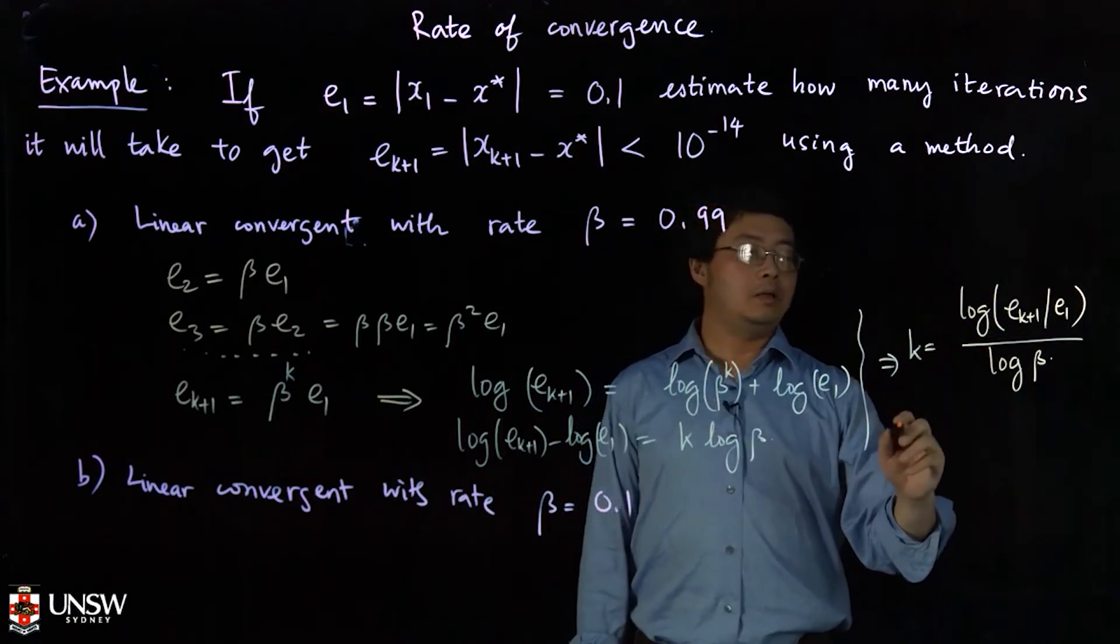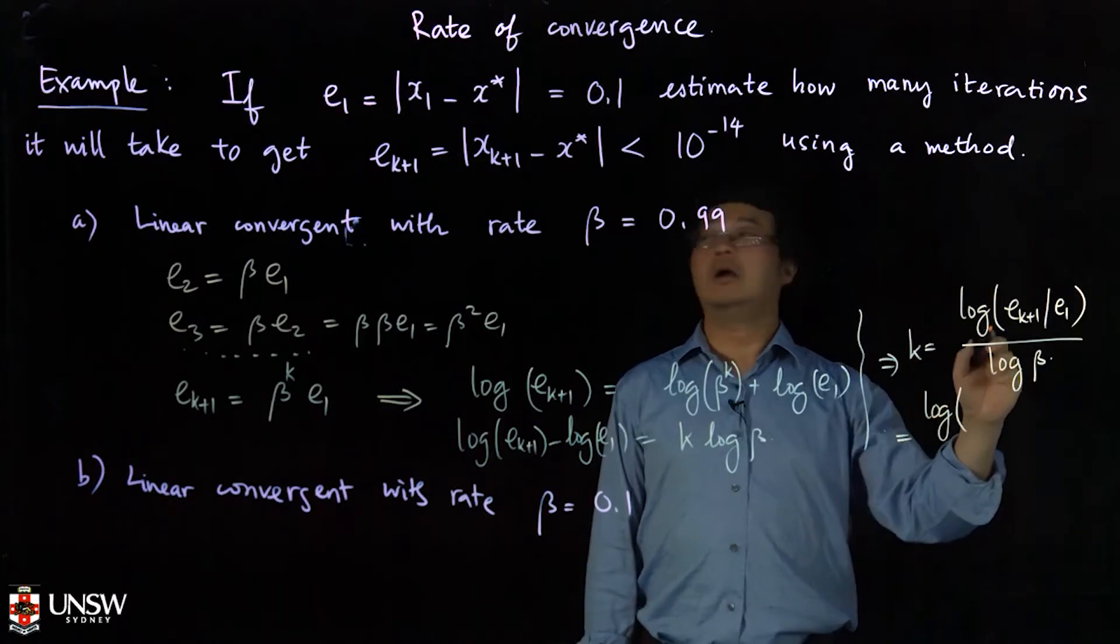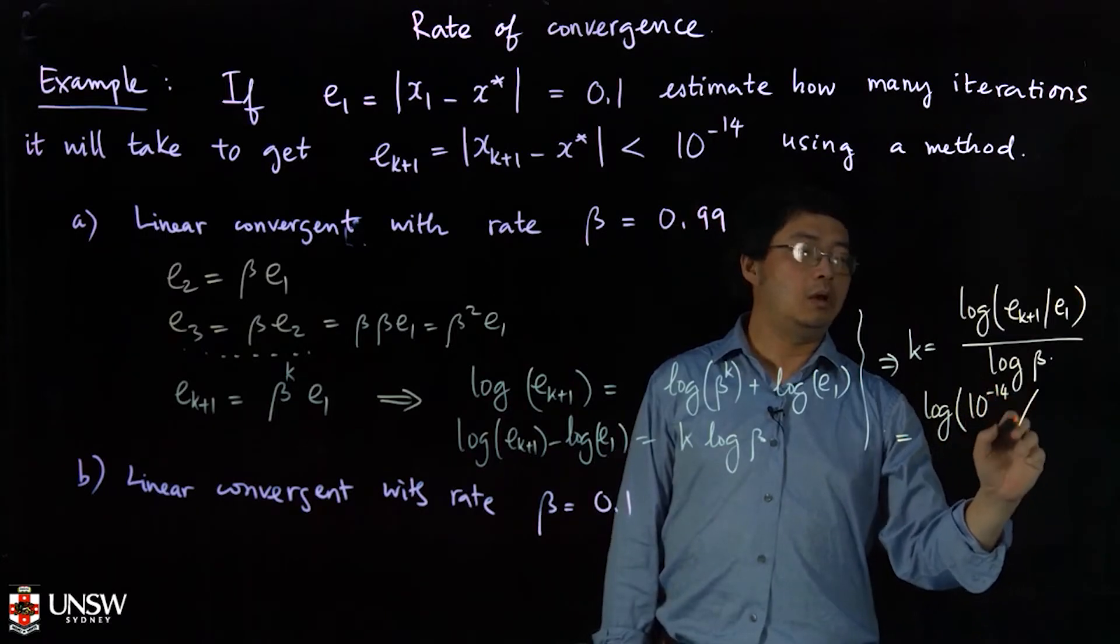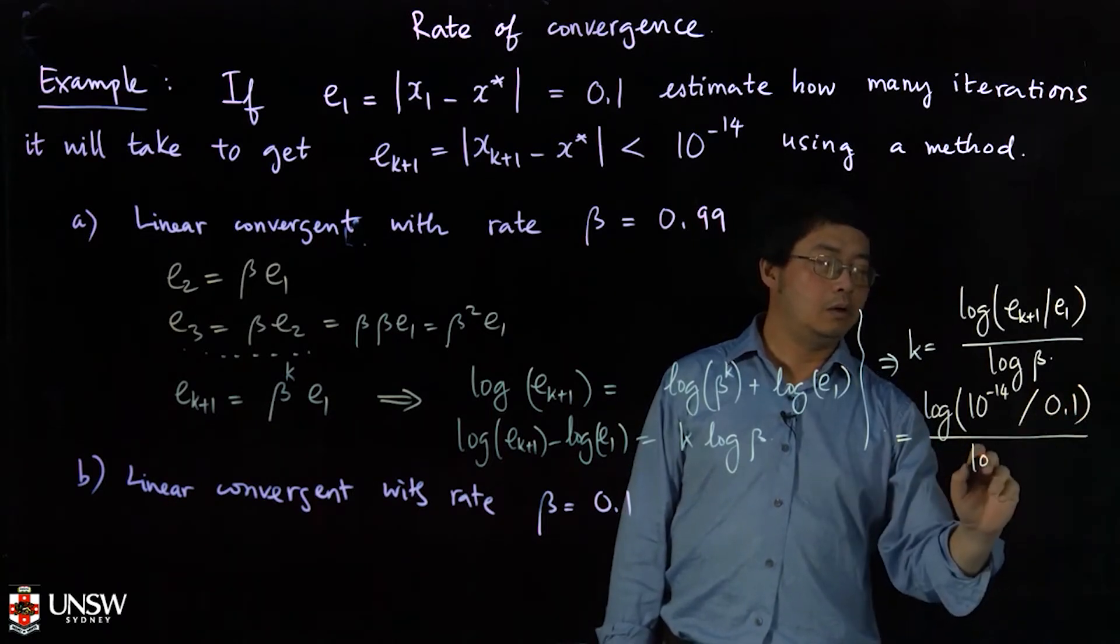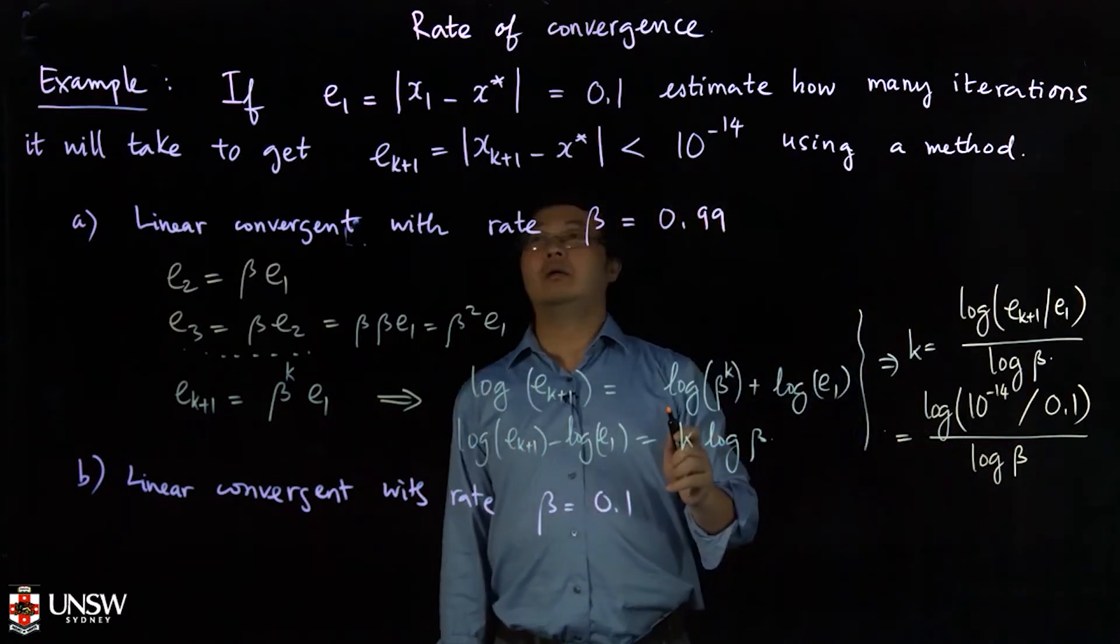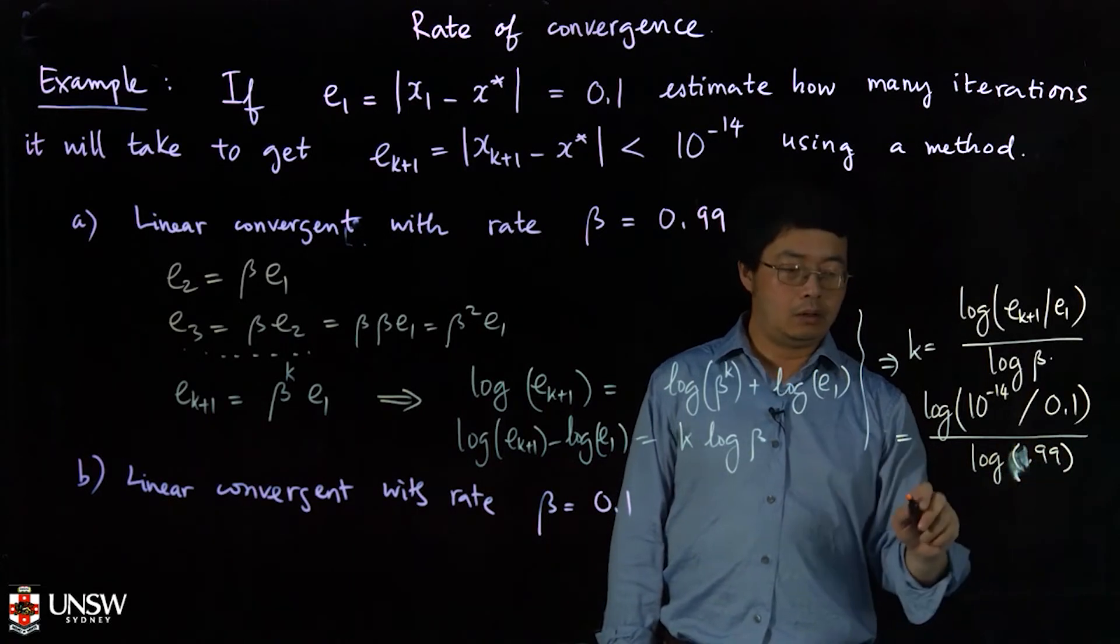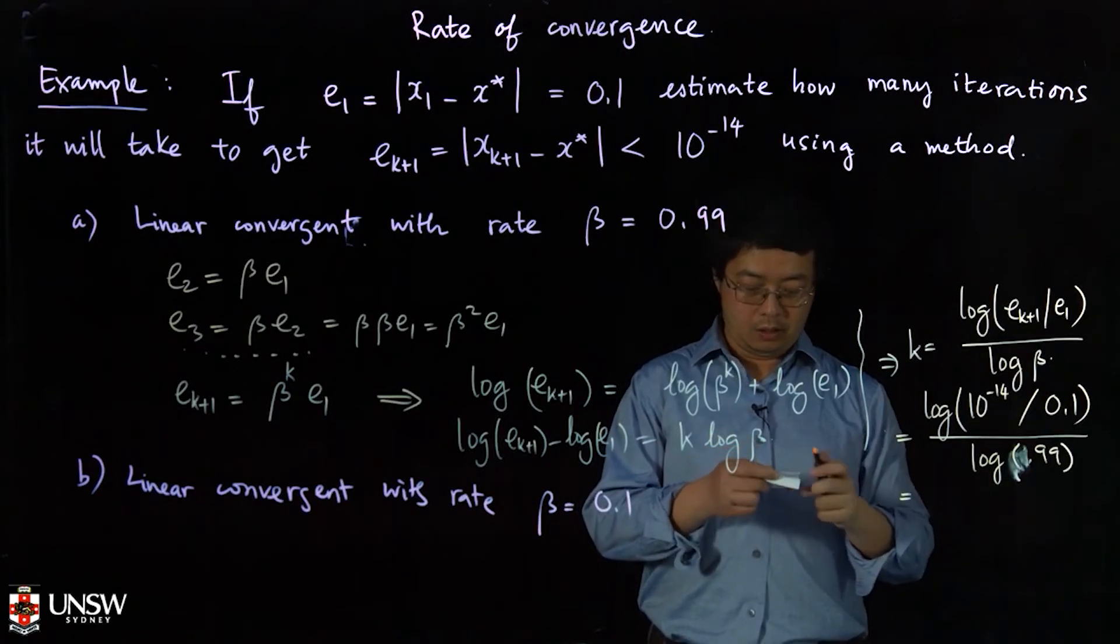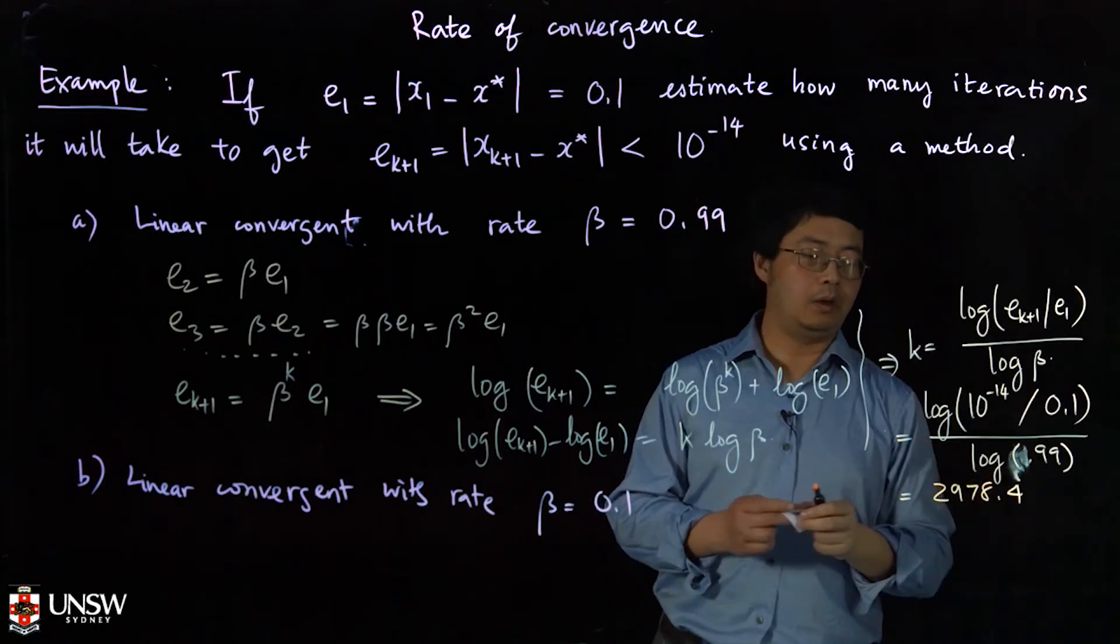So I plug it in and then I have k will equal log of e_{k+1} is 10^{-14} and e1 is 0.1, divided by logarithm of beta. When beta is 0.99, then I get in this example k will be 2978.4.